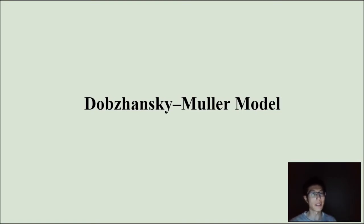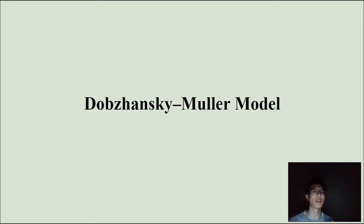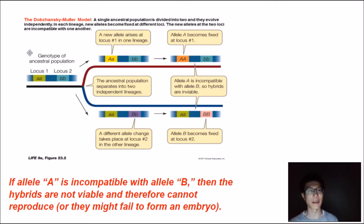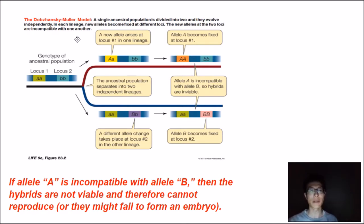The Dobzhansky-Muller model is really looking at why it is that in some different populations there isn't gene flow — what exactly are some of the barriers to gene flow. This model can show a situation where you can potentially have speciation as a result of some kind of a barrier to gene flow.